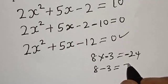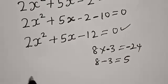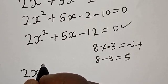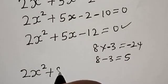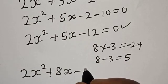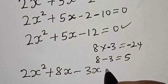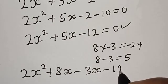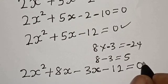Then we have 2x² + 8x - 3x - 12 equals 0.